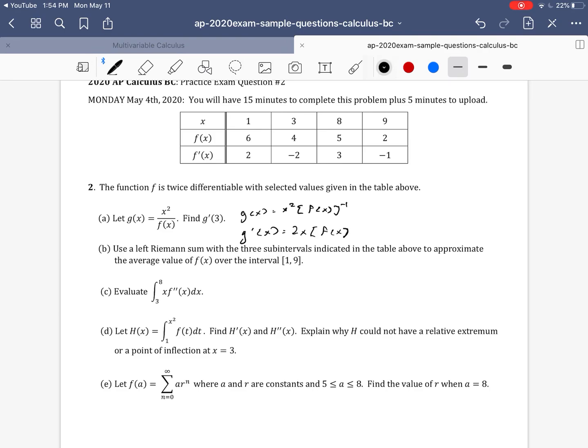So now we differentiate this, and we get 2x times f of x to the negative one. So differentiating that first part there. Plus x squared. And now I'm going to differentiate this part here. Notice I'm going to need the chain rule. So we're actually going to have a minus x squared because that negative one comes down as a coefficient. So we have minus x squared, f of x, and then we subtract one from the power, so negative two, times the derivative of the inside. That's f prime of x.